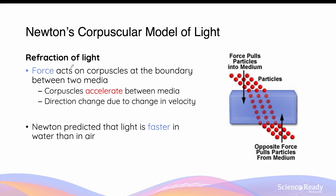He suggested that when light corpuscles reach the boundary between two media of different optical densities or refractive index, a force acts upon the corpuscles, causing them to accelerate. As a result, the vertical component of velocity and direction will change. If the new medium has a higher optical density or higher refractive index, there will be an attractive force pulling the corpuscles towards the new medium, causing the vertical component of velocity perpendicular to the surface to increase, while the horizontal component parallel to the surface remains unchanged. Adding the vectors together, this is why the corpuscles will bend towards the normal between the two surfaces.